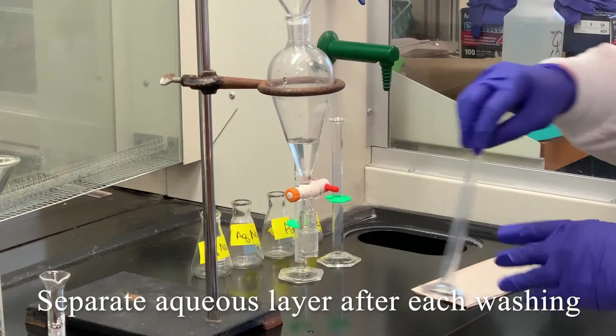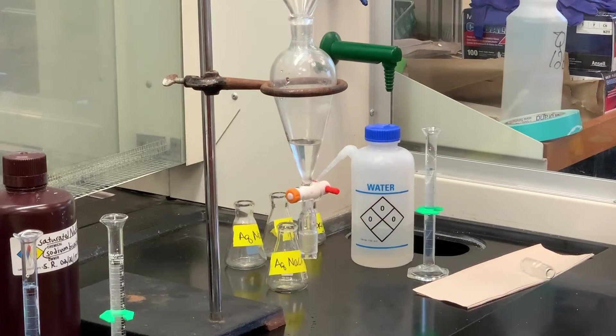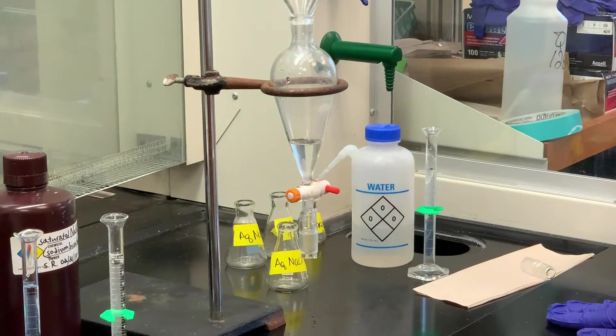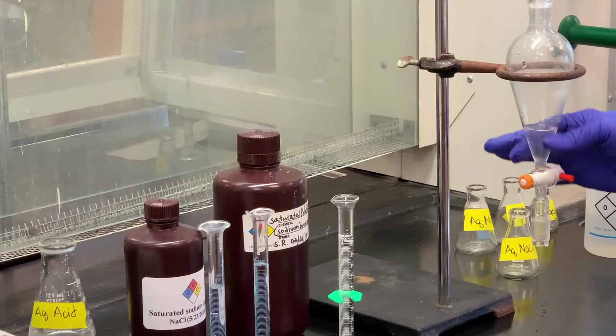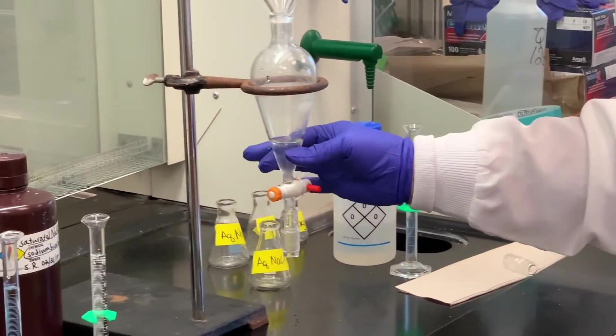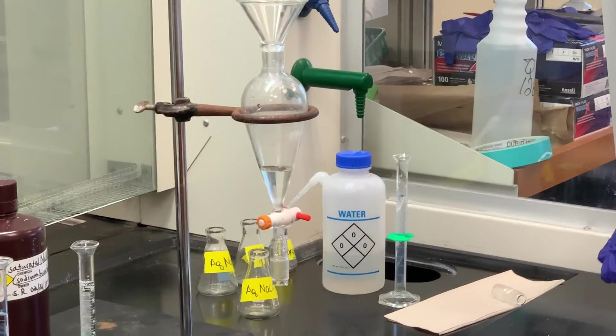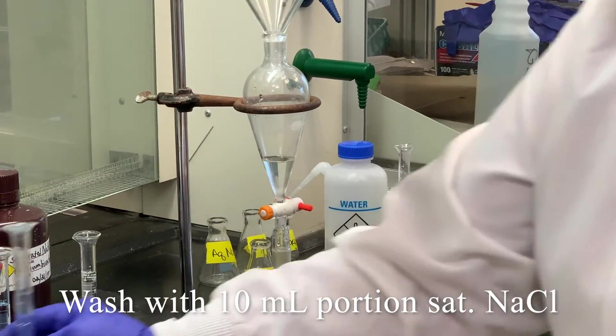So the first one we'll do is the saturated aqueous sodium chloride. Okay, I've gone ahead and measured out the substances we're going to be using to do the washing with. So remember, we've got an organic material inside the separatory funnel. The first thing we're going to use to wash that with is 10 mls of saturated sodium chloride.